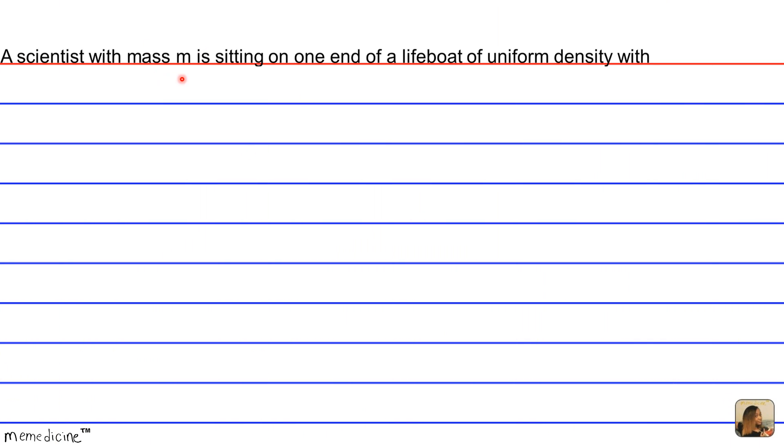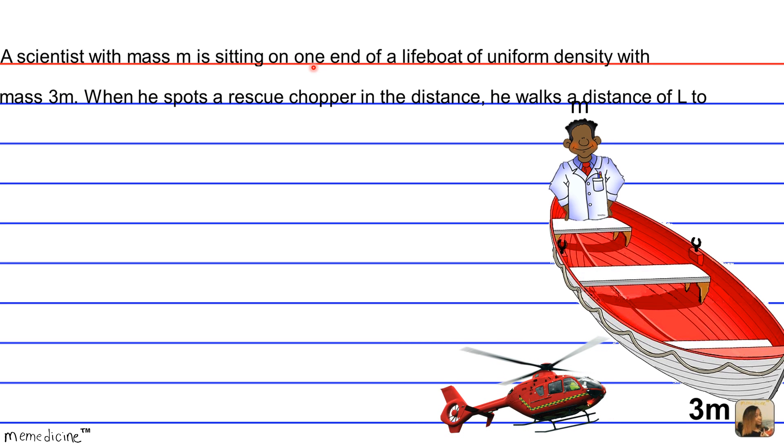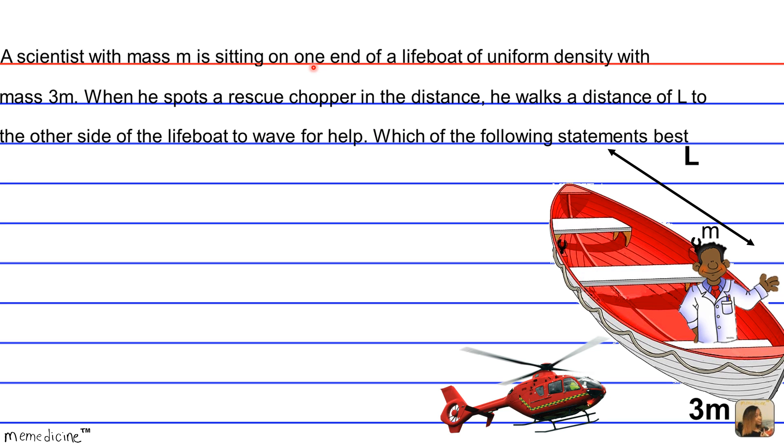A scientist with mass M is sitting on one end of a lifeboat of uniform density with mass 3M. When he spots a rescue chopper in the distance, he walks a distance L to the other side of the boat to wave for help. Which of the following statements best characterizes the motion of the lifeboat?